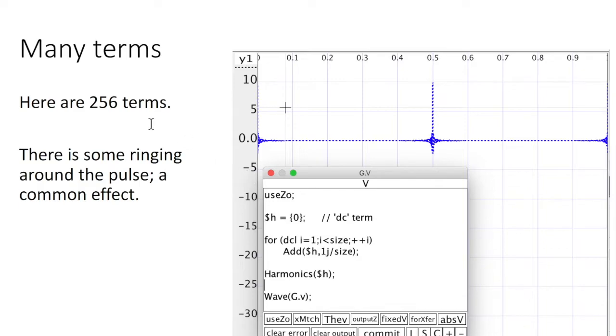So here's a case where I picked the first 256 harmonics. You can see the pulse is fairly narrow. It's pretty flat over here. It's got this ringing. It's very common with digitally synthesized pulses.